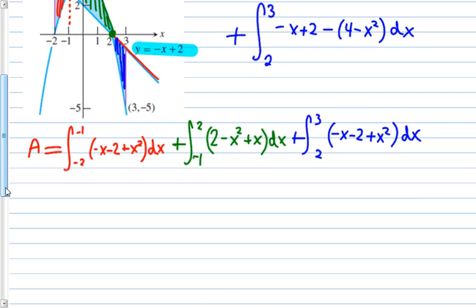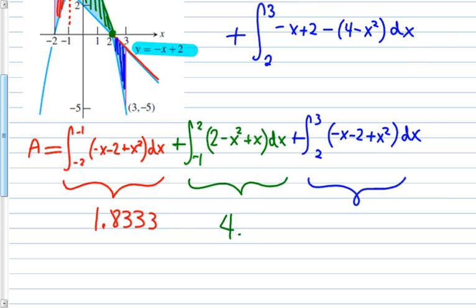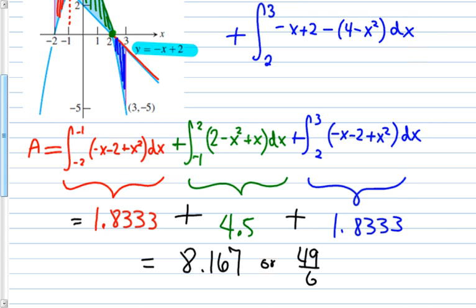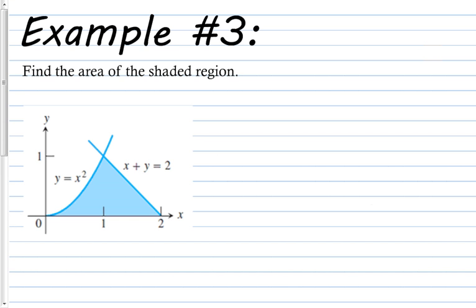Because we should know how to integrate already. If we don't, we need to practice. And I mean, when I say we, I mean you. So, when I plug into the calculator, I got, and I'm, all of this is in decimals for me. That's what I have there. And then here, I got that. And here, oops, different color. I got 1.8333. When you add all of these up, you get 8.167 or 49 over 6.